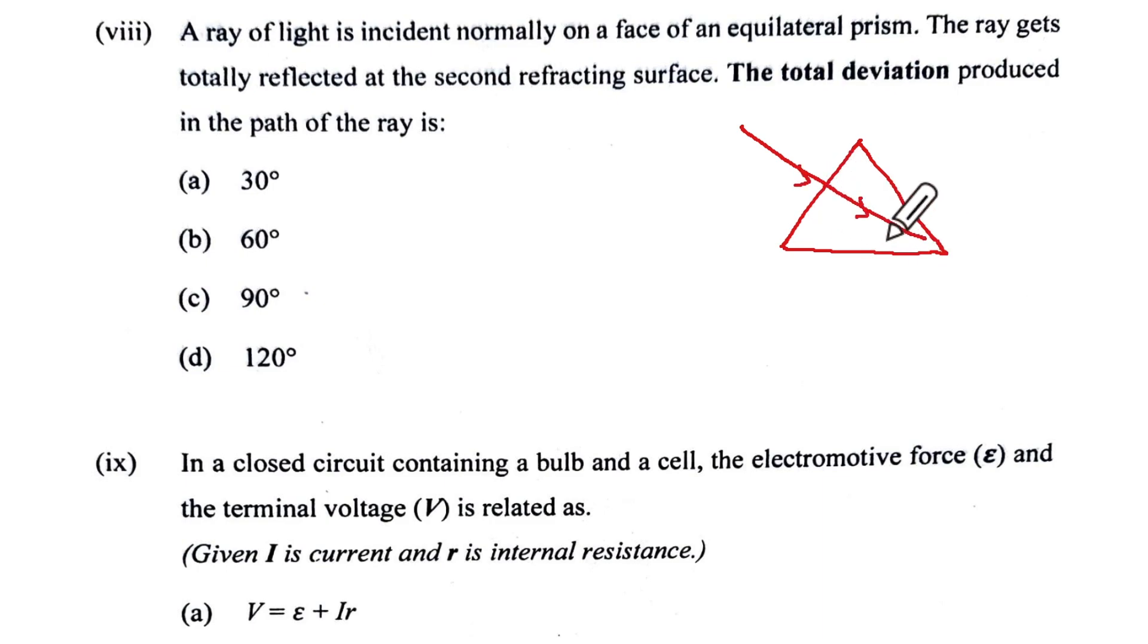This is 60 degrees, this is 30 degrees, the normal over here. The total deviation will be this angle, so this will be 30, this is 60, this is 60. So 60, 60, 120, and that is the option.